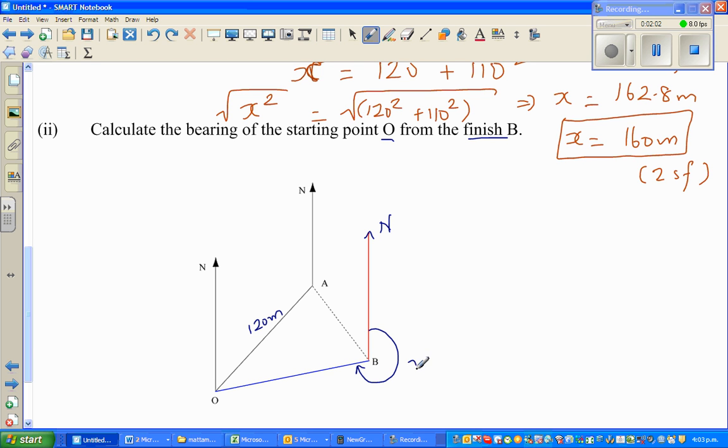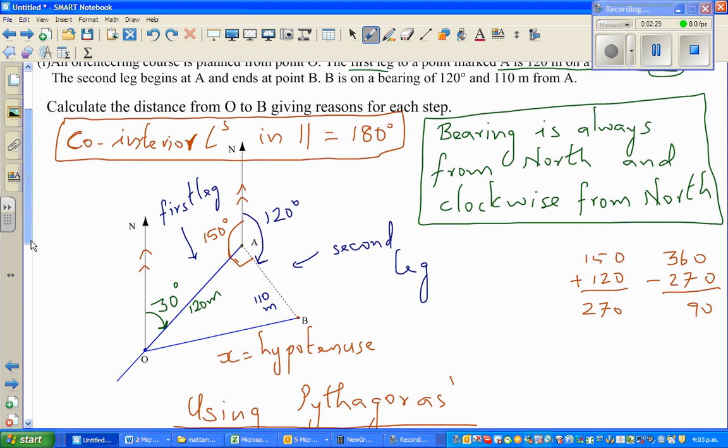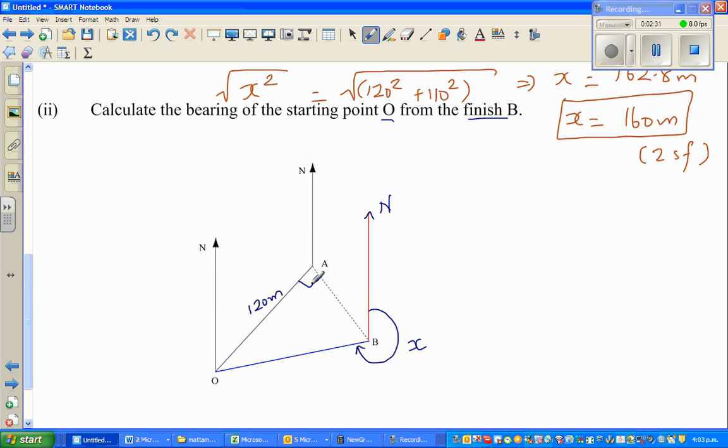To find that x we know that this is the right angle from the previous example. This is given to be 30 and these two are co-interior angles in a parallel line so this is 150. This is given to be 120. 150 plus 120 is 270 so this is the right angle.